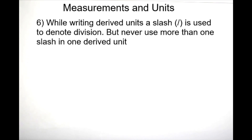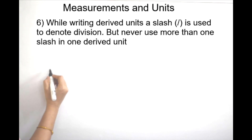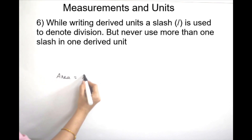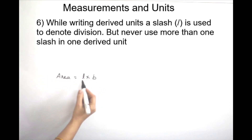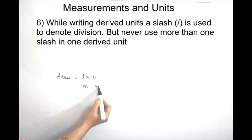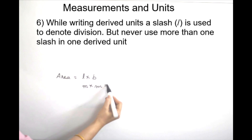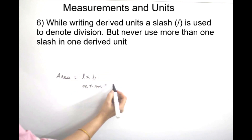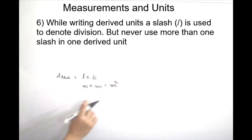We are learning the area of the rectangle. The area is length into breadth. The unit of length is meter and the unit of breadth is meter. When we multiply the two, the area of the rectangle has the unit meter square. That is called derived units.